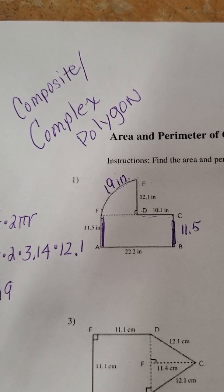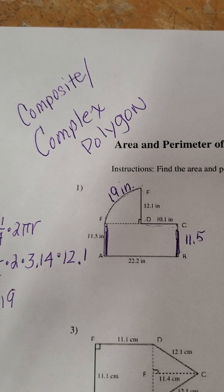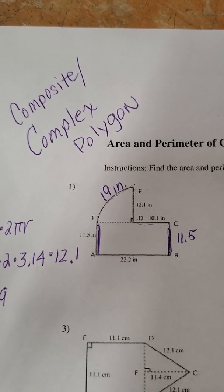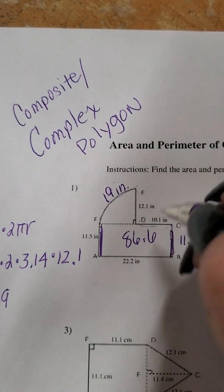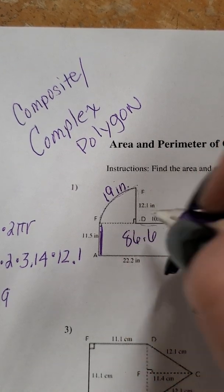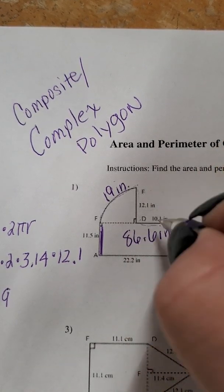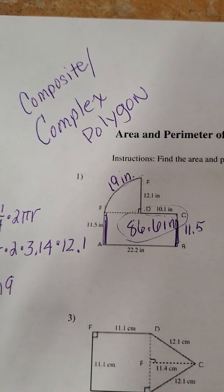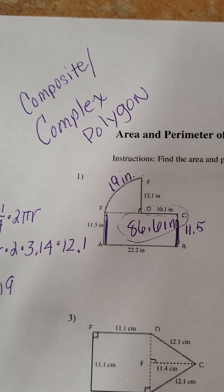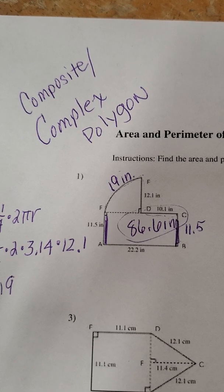Okay so I think I got them all, I may have not, I may have missed something but I got 86.6 point six inches for the perimeter of that shape.